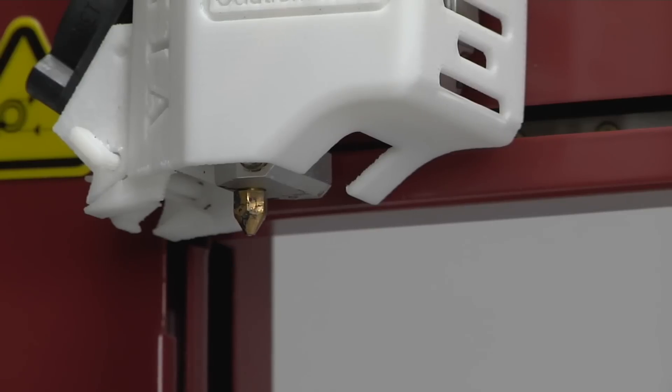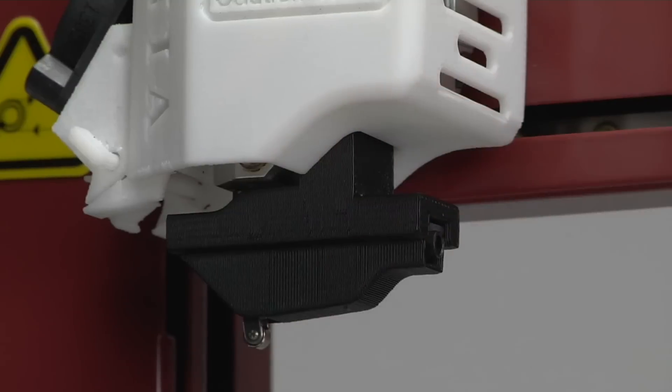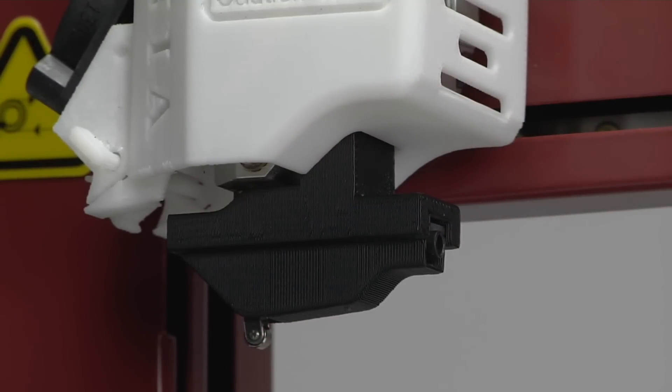After manually leveling the platform, connect the platform calibration probe to the extruder head. It slips over the extruder nozzle and magnetically clicks into place.